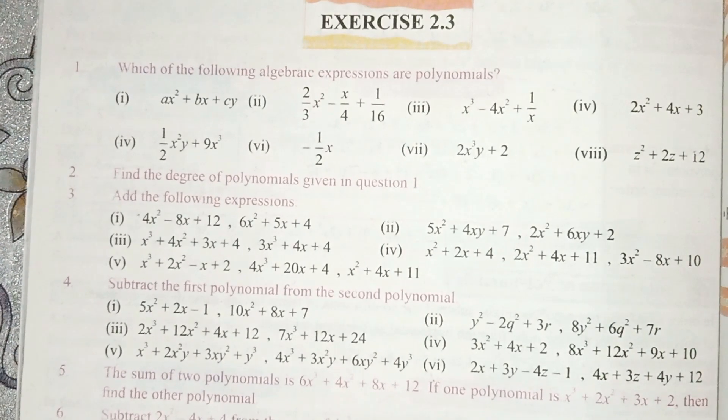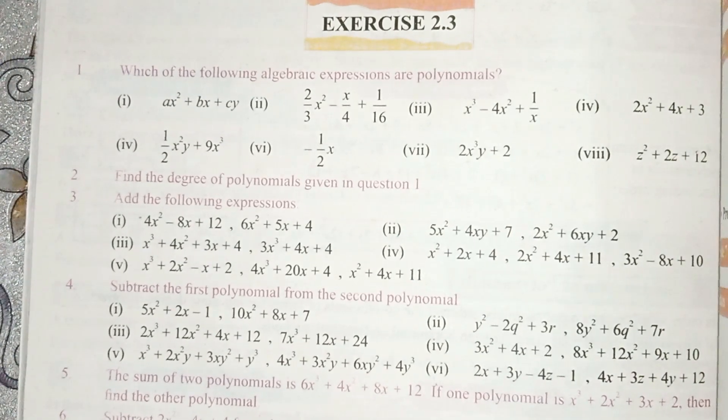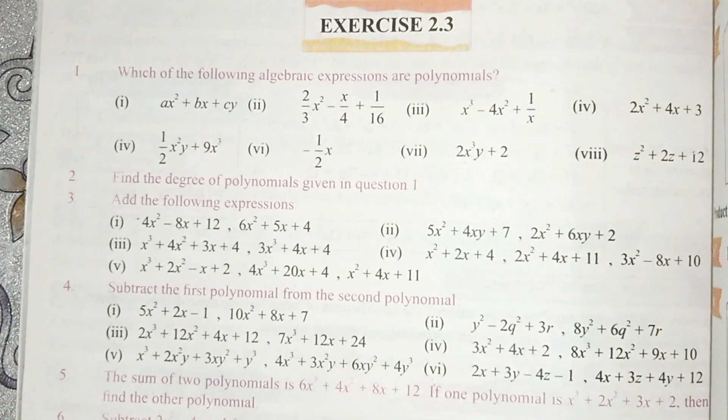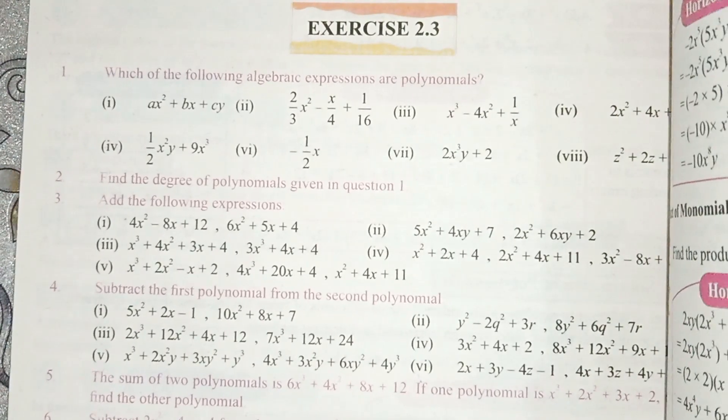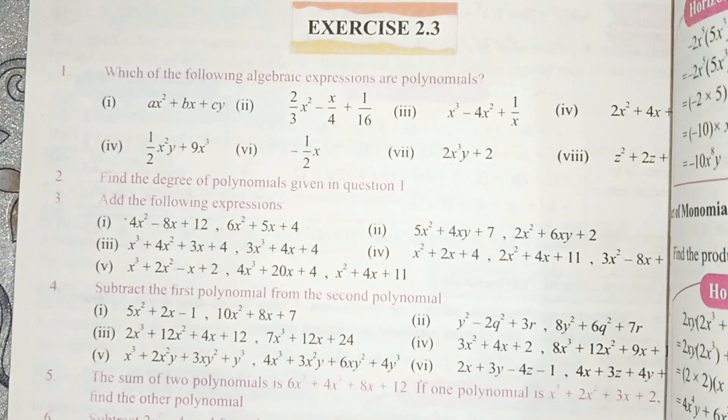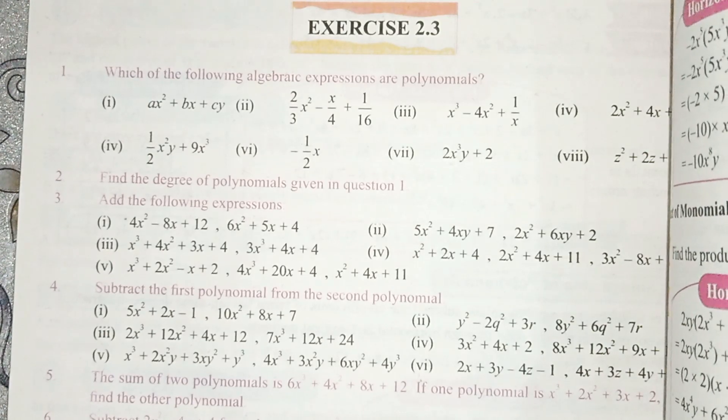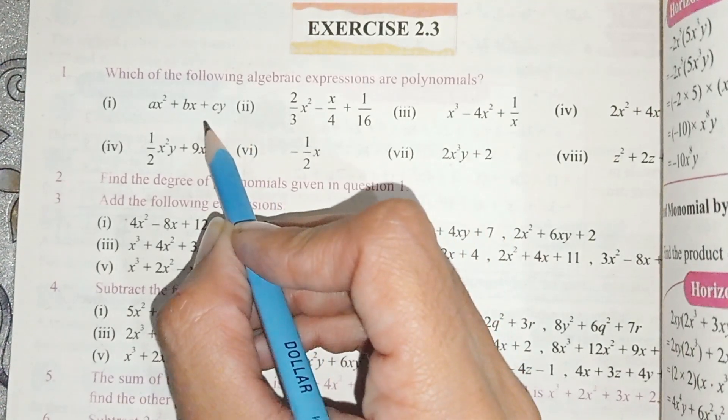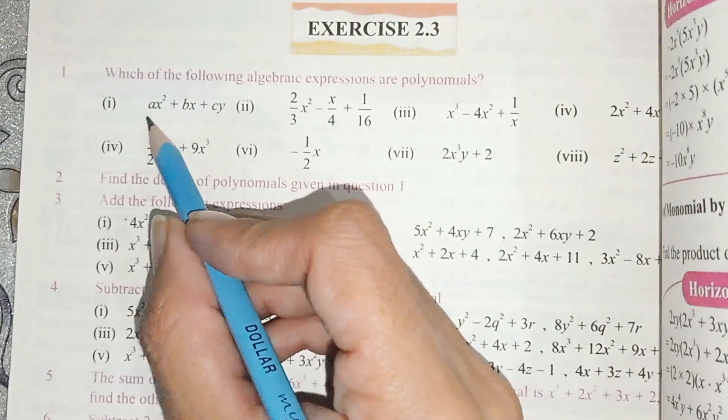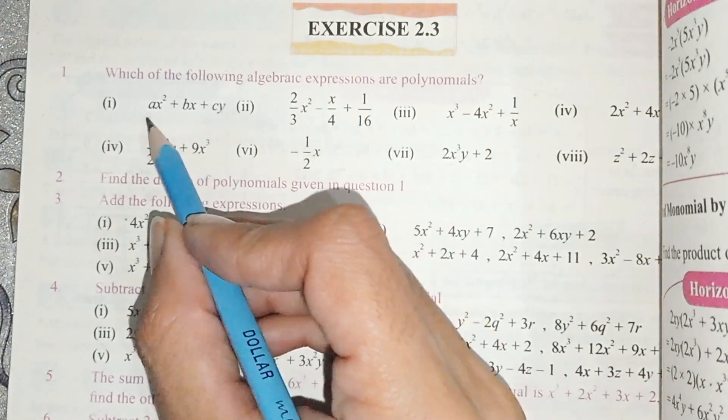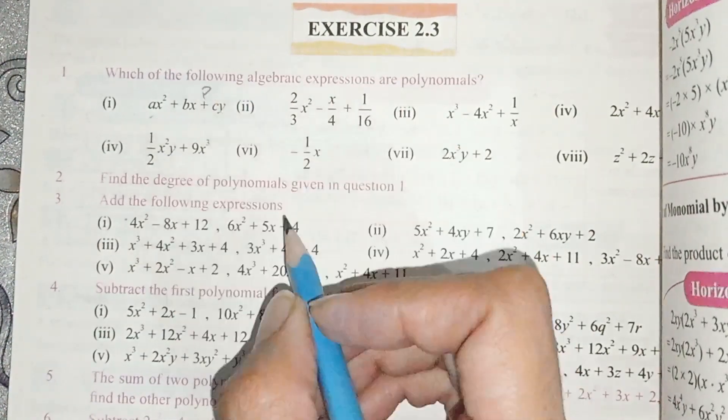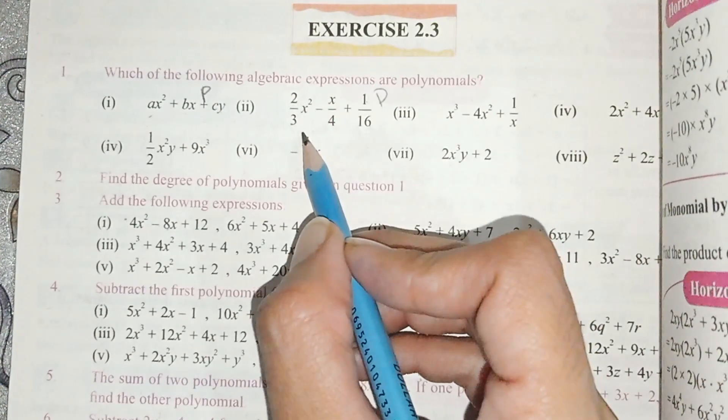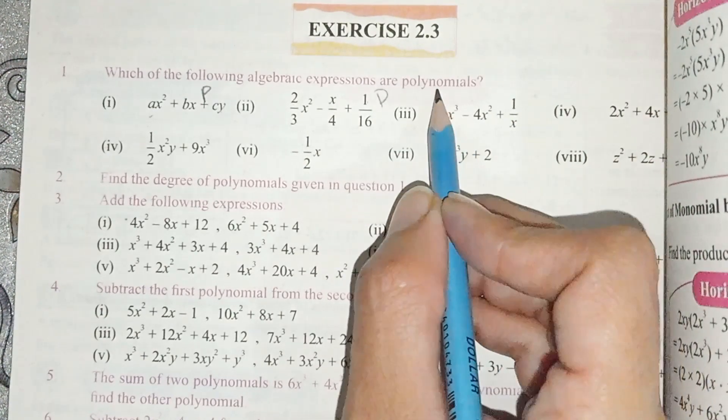Now students, this is exercise 2.3. Which of the following algebraic expressions are polynomials? Now we will tell you which polynomial is in it. Two identifications are in the polynomial. One is the x and y, the variables are not negative. And the other is not under root. So this is the identification. This is not polynomial. This is polynomial expression. This is polynomial expression. There is no negative value of x. This is polynomial. This is not polynomial.